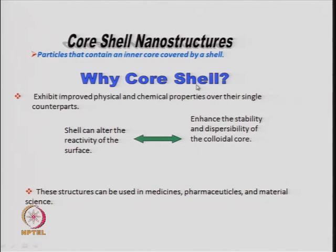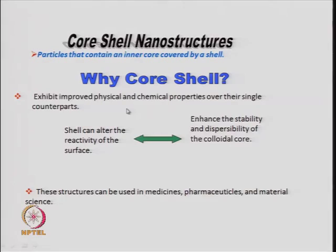Why are core-shell nanostructures important? They are important because they give improved physical and chemical properties over their single-component counterparts. For example, if you have a core of material A and a shell of material B, the core-shell A@B can give you improved reactivity on the surface.